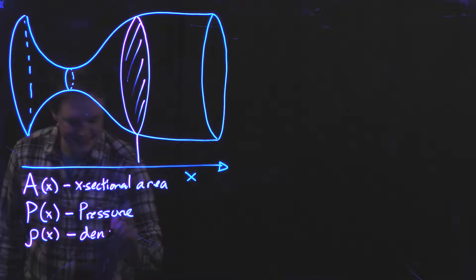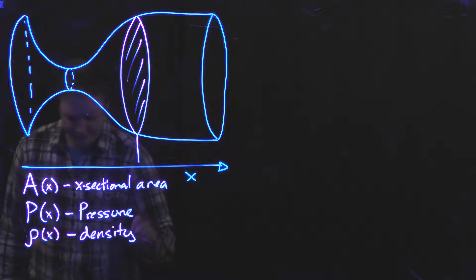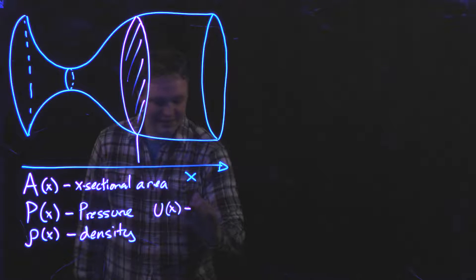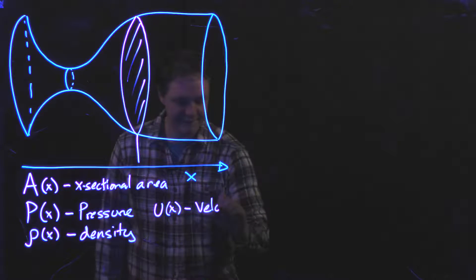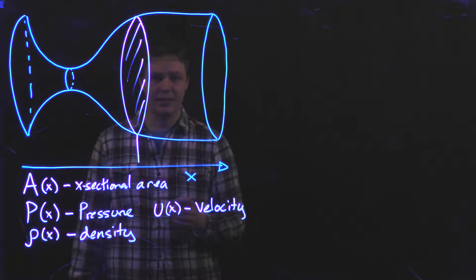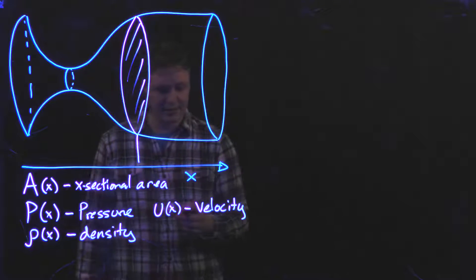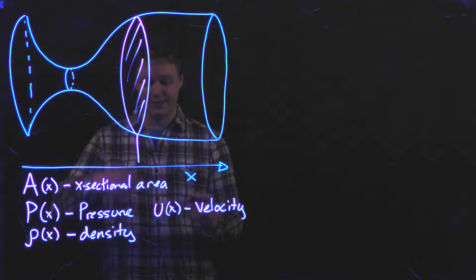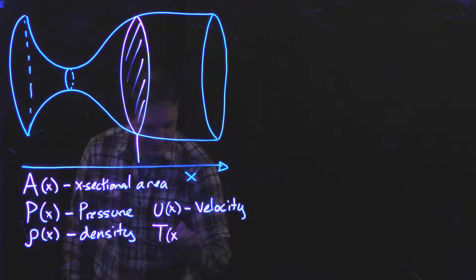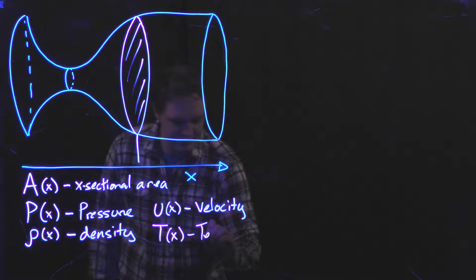There is U, as a function of x. This is the velocity, the local velocity with respect to the exhaust nozzle, in the x-direction. And finally, there is T, as a function of x, which is the temperature.